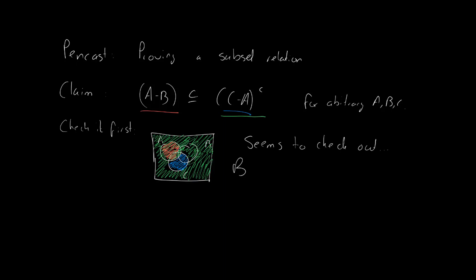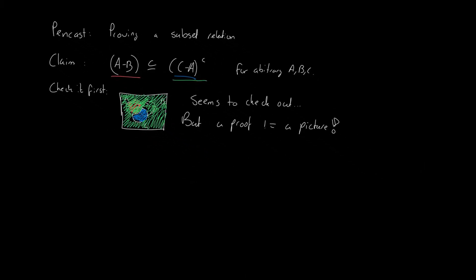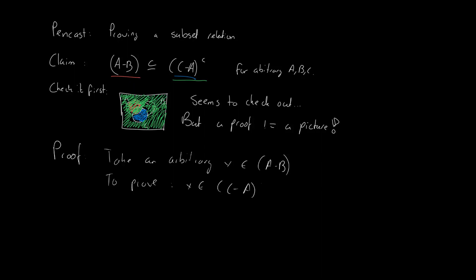But remember, a picture is not a proof. So without further ado, let's delve into a proof for this claim. So where do we start? Well, remember that a subset means that all elements that are in A minus B must also be in the complement of C minus A. So let's take an arbitrary element of A minus B, and now we need to prove that this arbitrary element is also in the complement of C minus A.